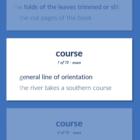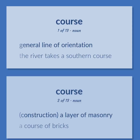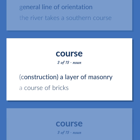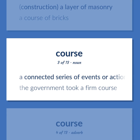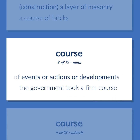Course: General line of orientation — the river takes a southern course. Construction: A layer of masonry — a course of bricks. A connected series of events or actions or developments — the government took a firm course.